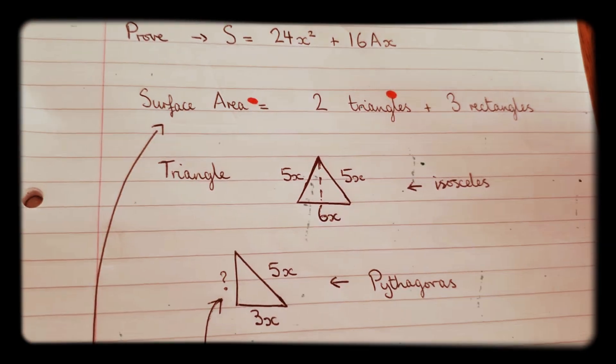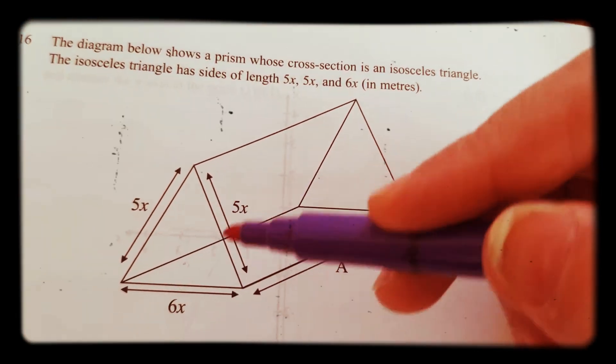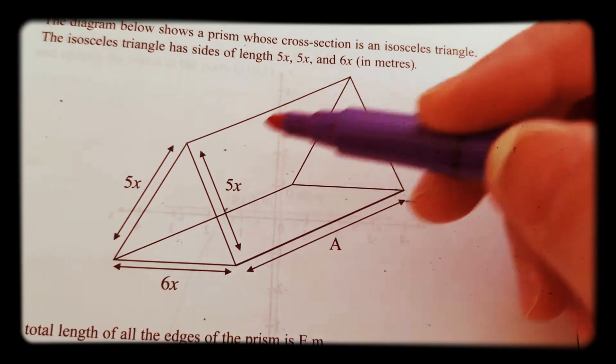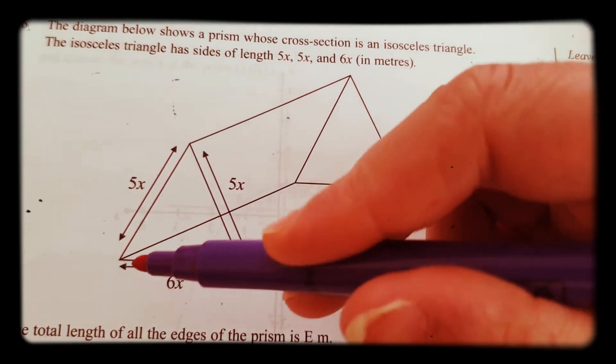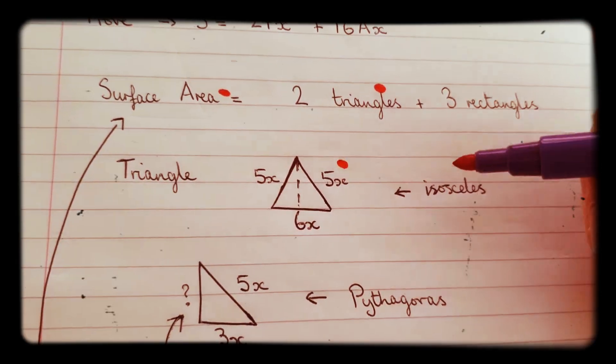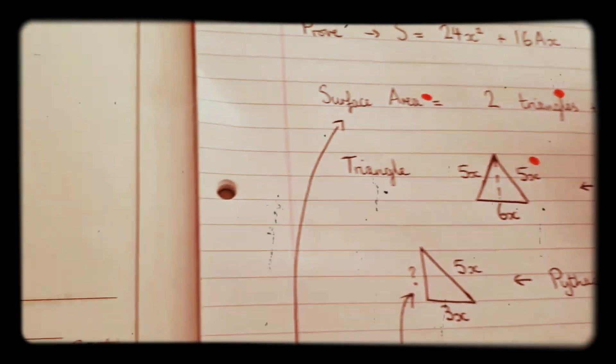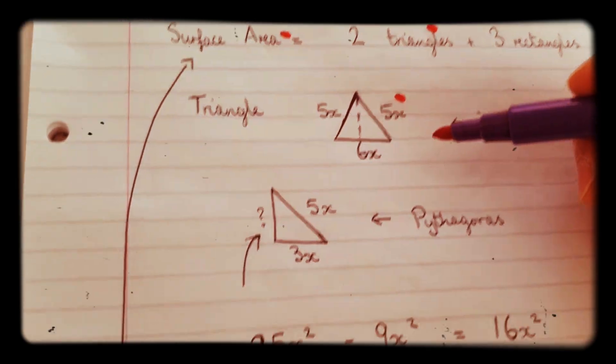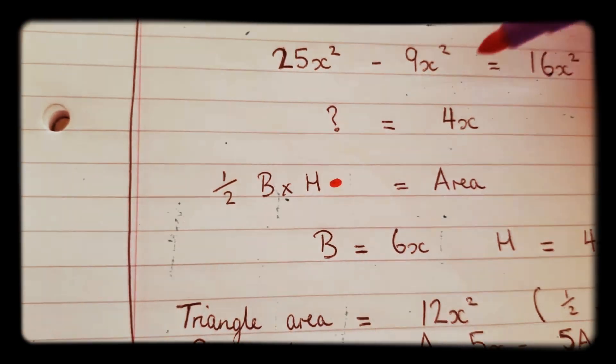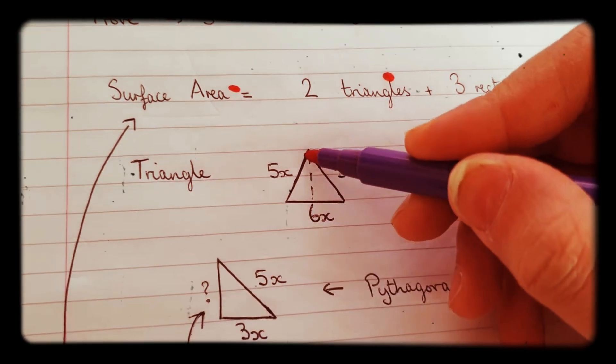The clue in the question is where it says that this triangle here, this cross-section, is an isosceles triangle. These two sides are the same as you can see here. So in order for us to work out the area of that triangle we need to do half base times the height, but in order for us to do that we need to know what that height is.